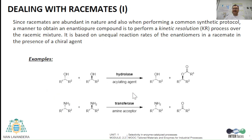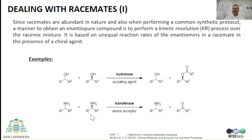As typical biocatalytic examples, hydrolases can selectively acylate racemic secondary alcohols forming a single ester enantiomer, or transferases can selectively deaminate an amine enantiomer to the corresponding ketone, leaving untouched the other amine enantiomer.